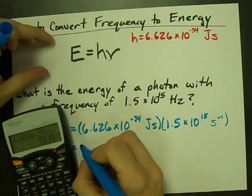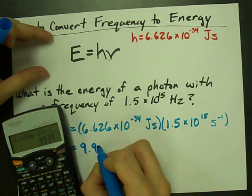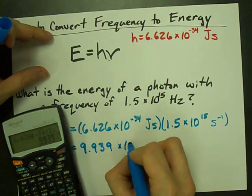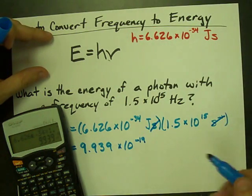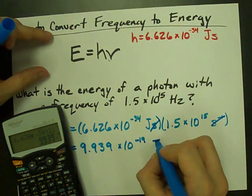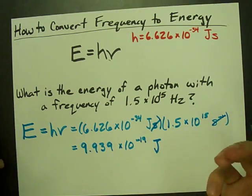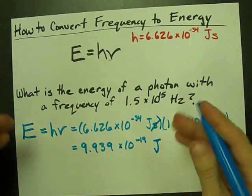What I get is 9.939 times 10 to the power of negative 19. My seconds and per seconds cancel each other out. Now I'm left with joules as a unit, which is ideal because energy is measured in joules.